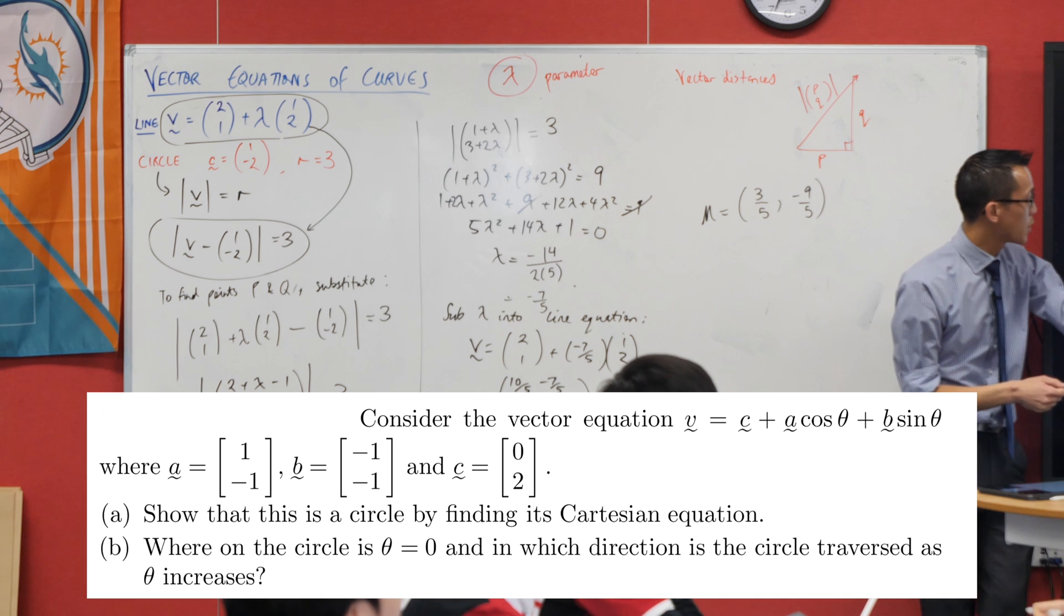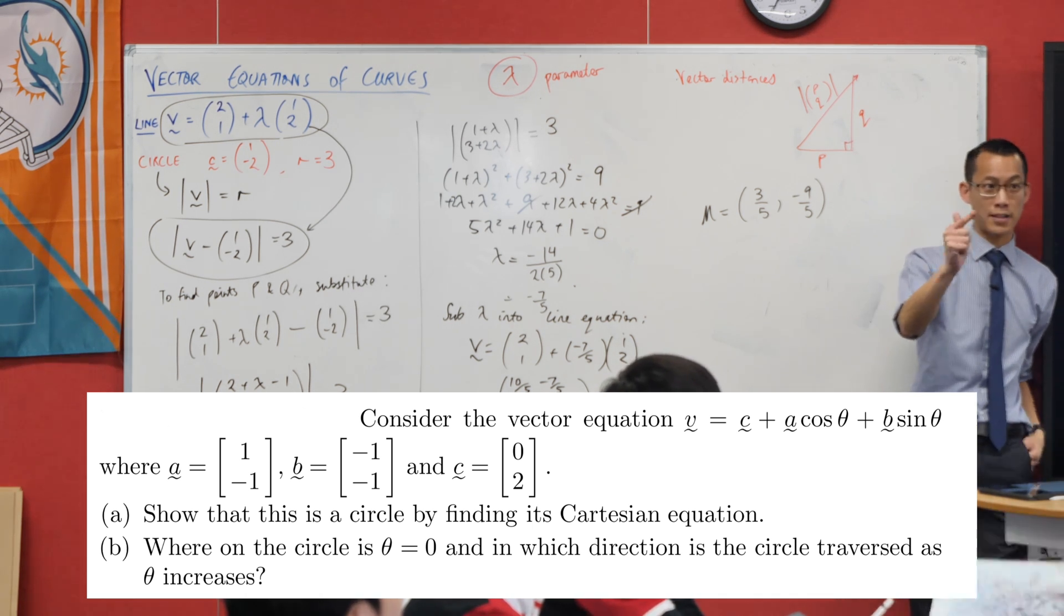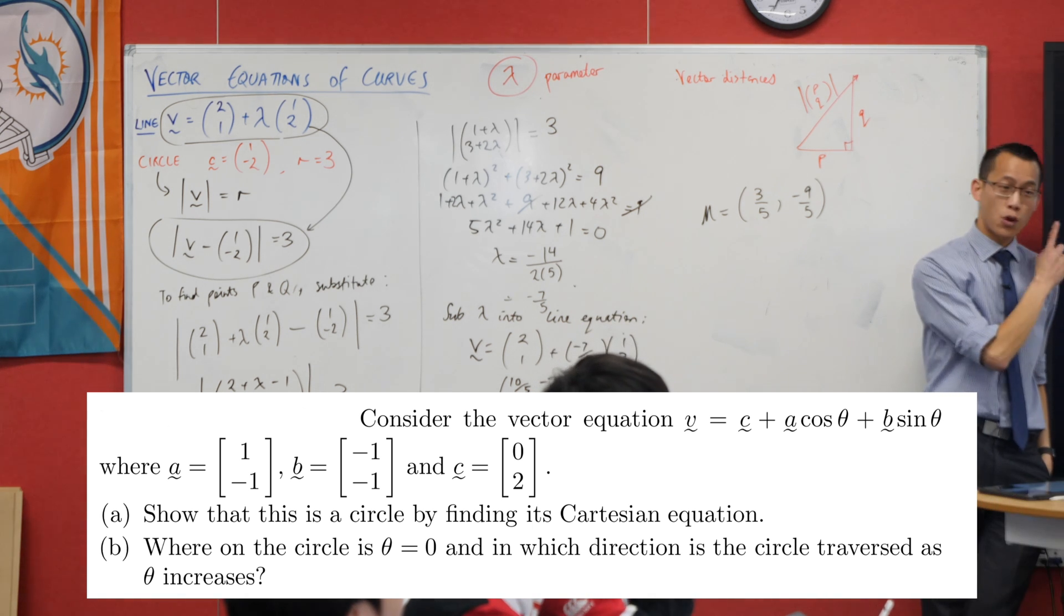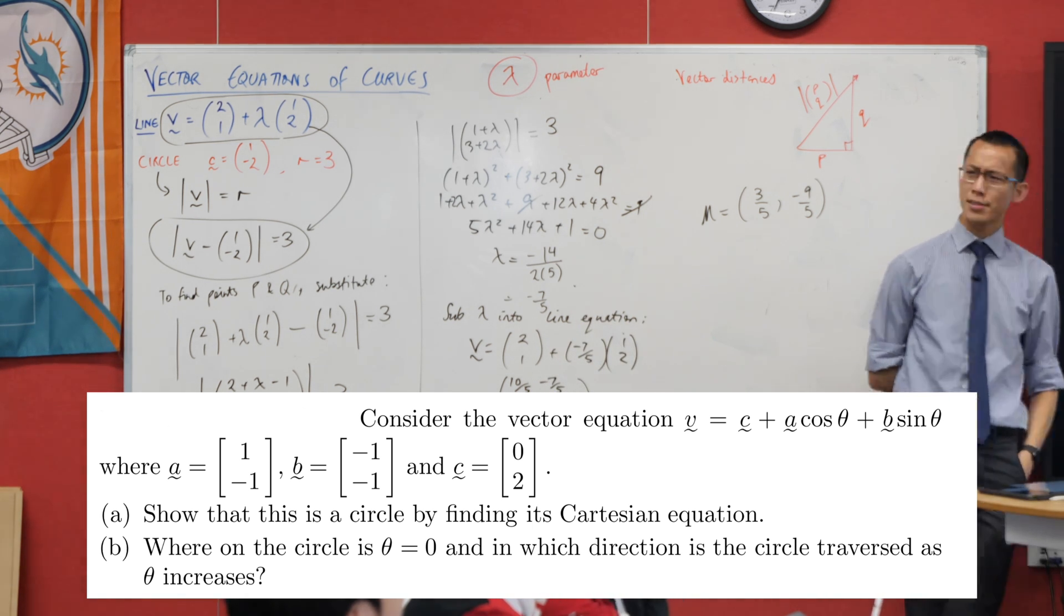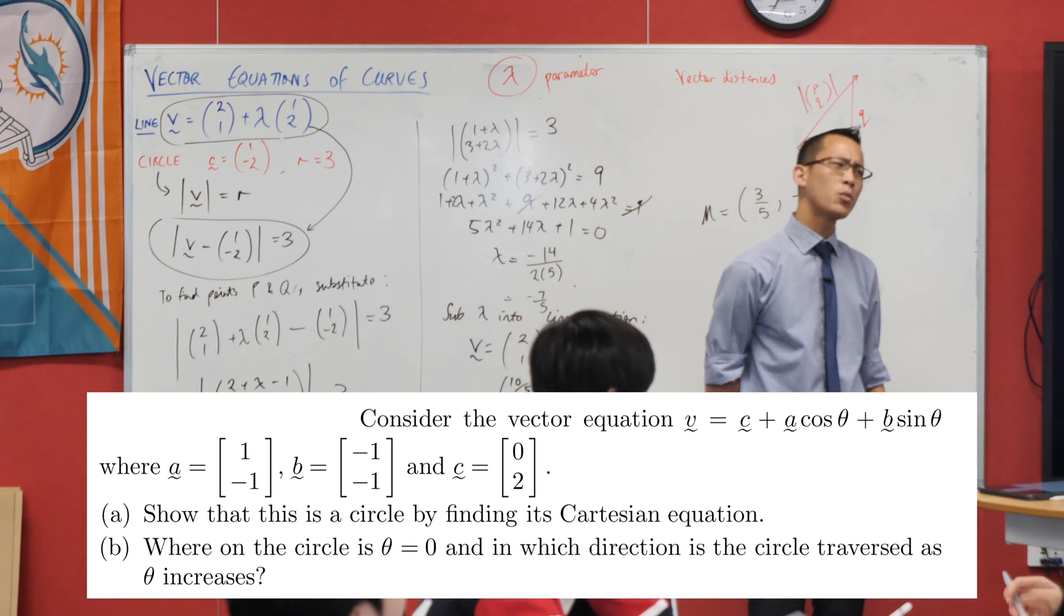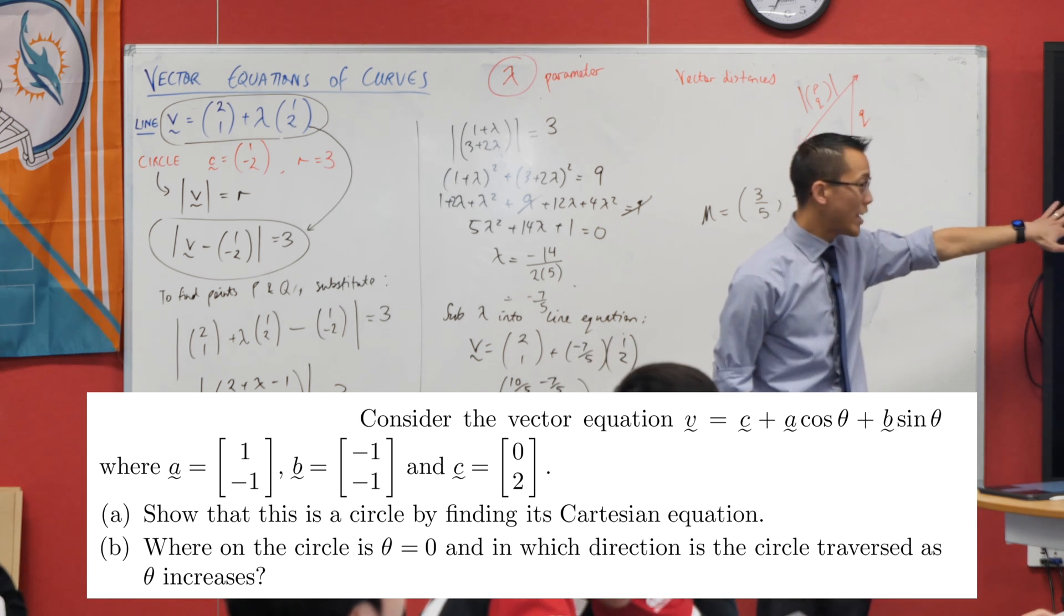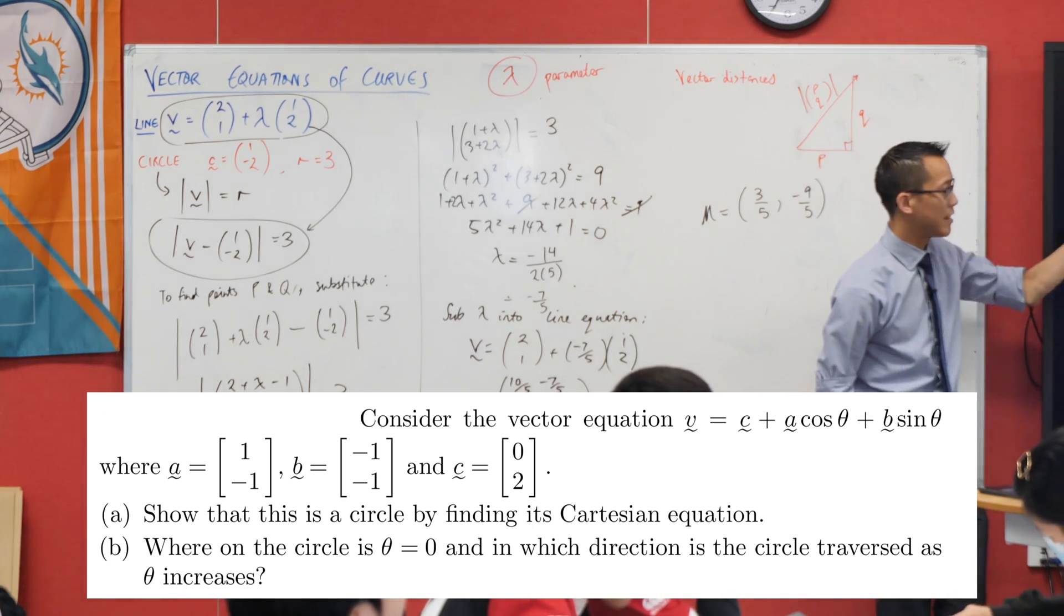The question will explain. Got a vector equation and then they've given you particular values for vector a, vector b, vector c. The question itself, part A, says show that this is a circle. I wonder which part of you might think, oh I can see why that might be a circle.